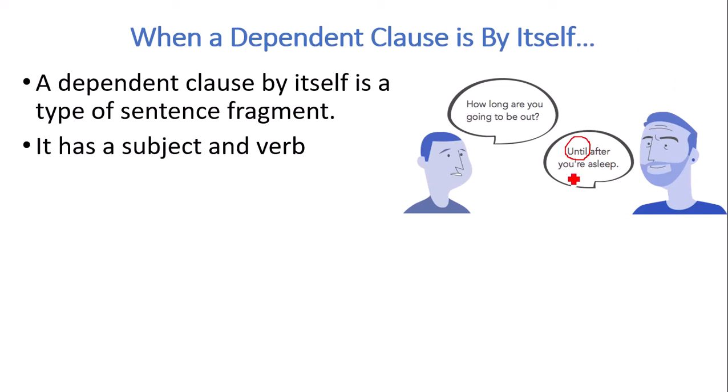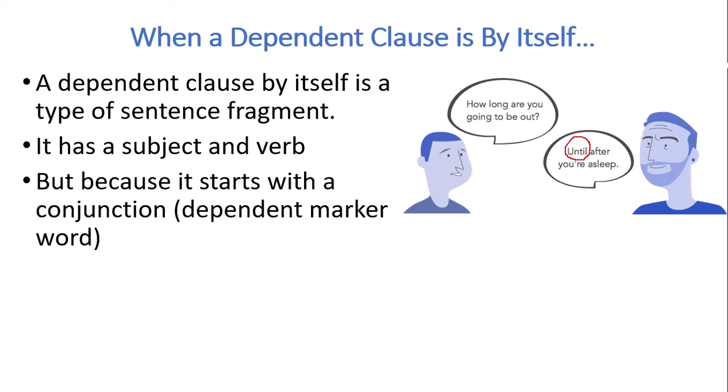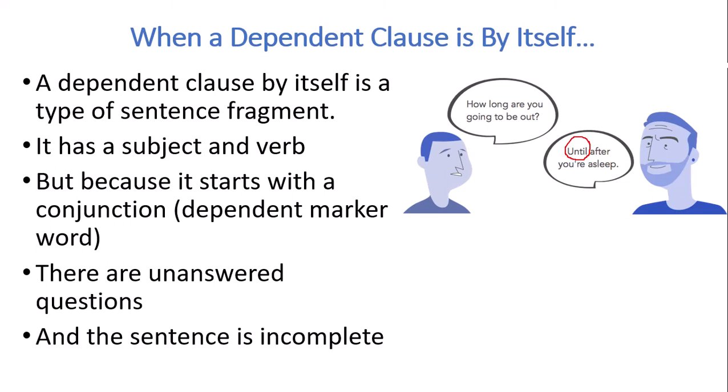The dependent clause by itself is a type of sentence fragment. He has a subject and a verb. But because it starts with this conjunction, this dependent marker word, there are unanswered questions. In writing, possibly not as much if we're talking to somebody. But in writing, there'd be unanswered questions and it would be very confusing. So the sentence is incomplete.